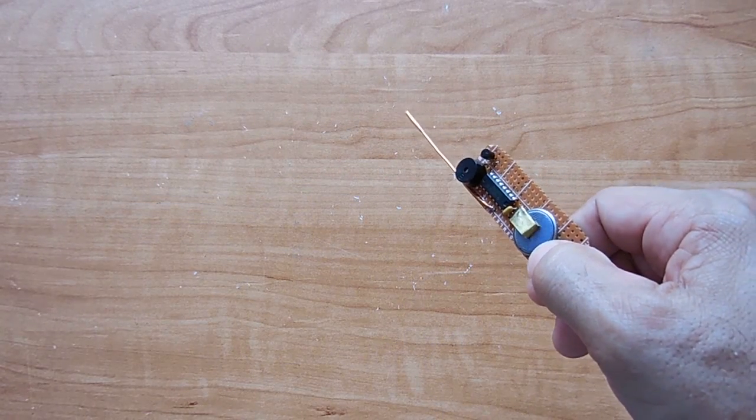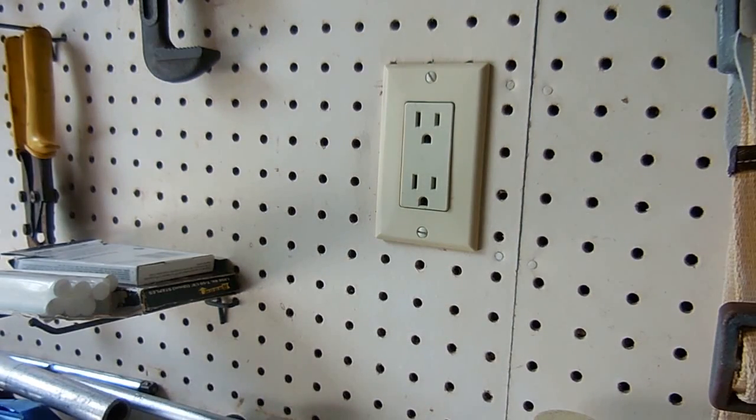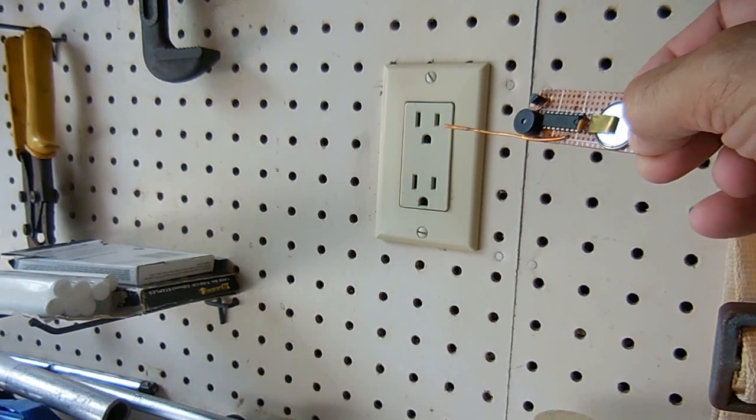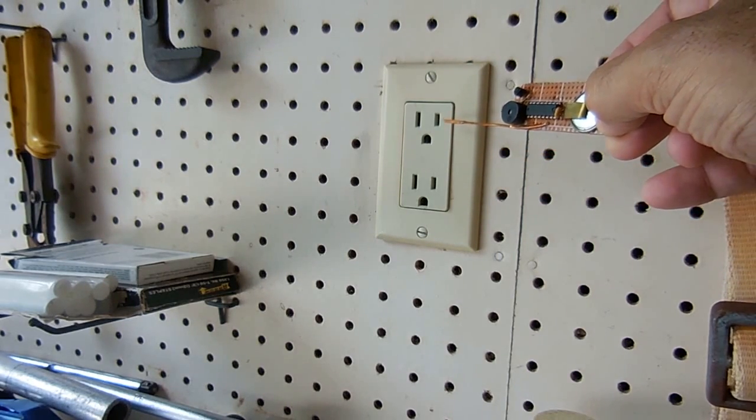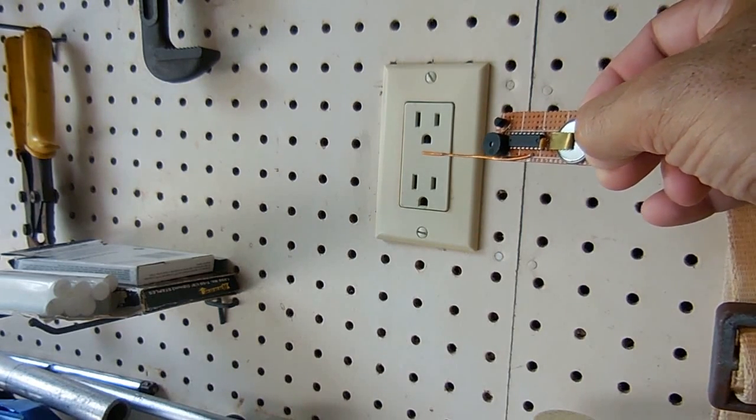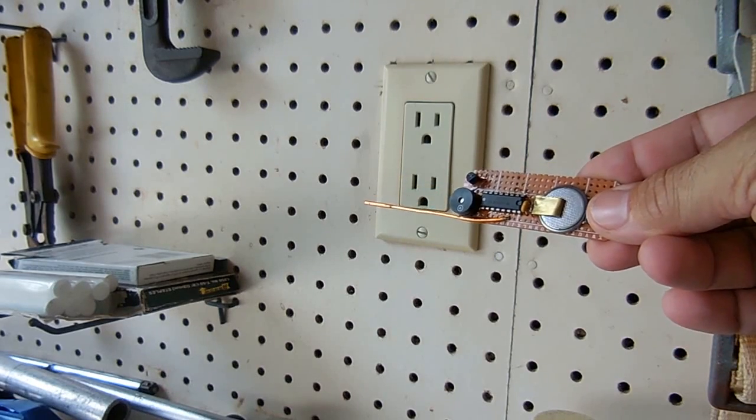I'm now going to give you a few demonstrations showing how well this AC voltage detector works. The first test will be the receptacle with nothing plugged into it. Push the button on the tester and then bring it close to the receptacle. Pretty good distance—works very well. Now I'm going to plug in a cord.